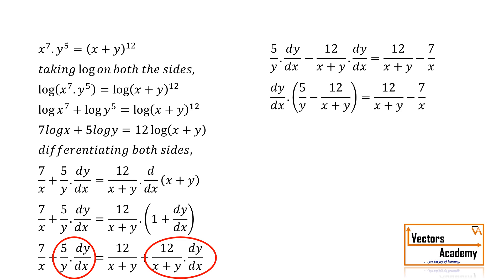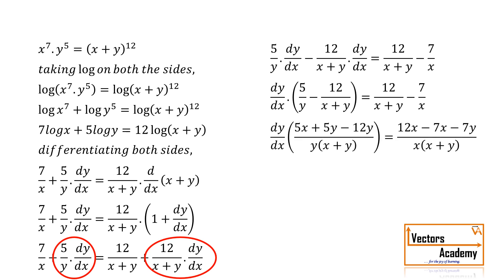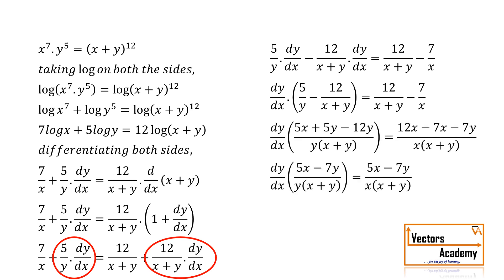We now have two fractions on both sides. We cross multiply and simplify. After simplifying, the numerator on both the left and right hand sides is the same, so we cancel them out. The bracket x plus y in the denominator also cancels. The final answer for dy/dx is y by x.